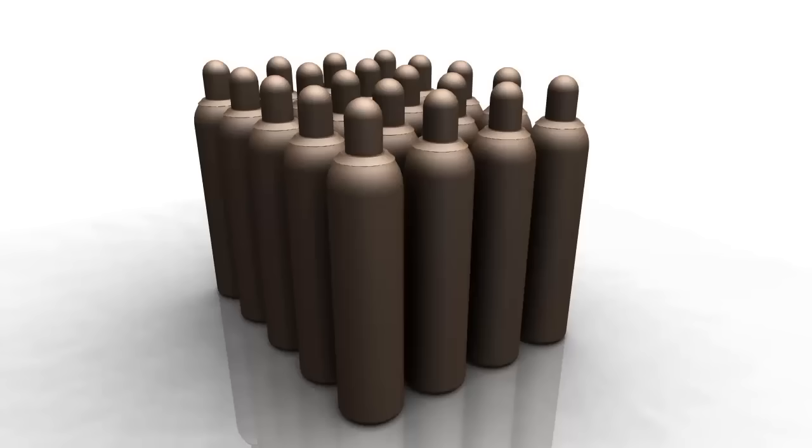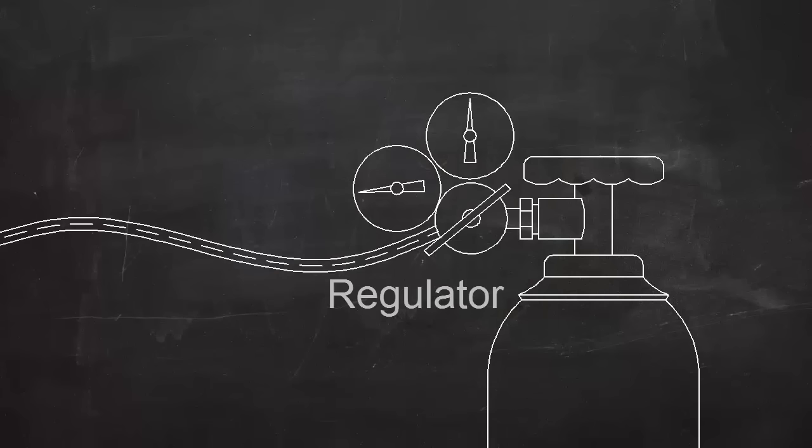The shielding gas is stored in high-pressure cylinders like these. The pressure is reduced to a usable level by a device called a regulator.